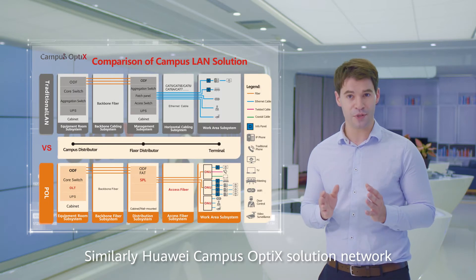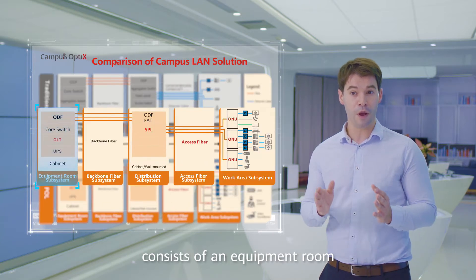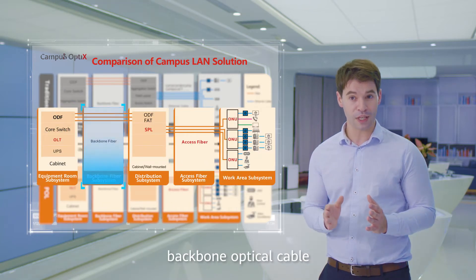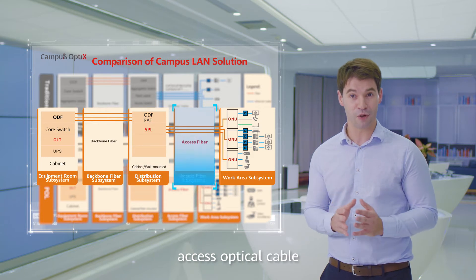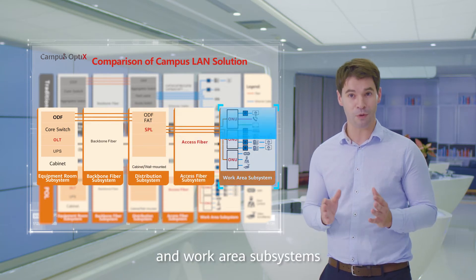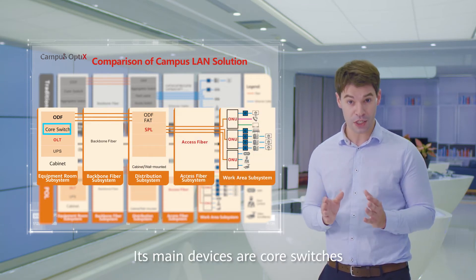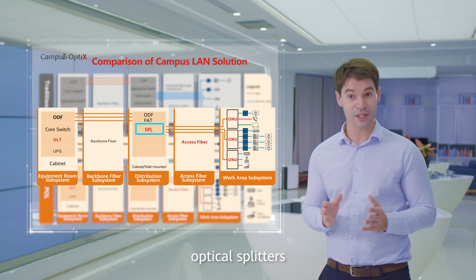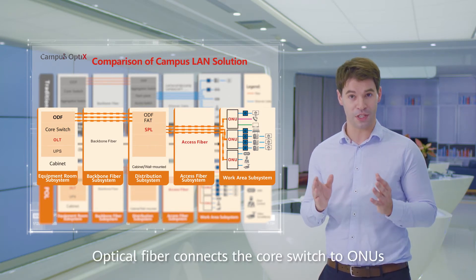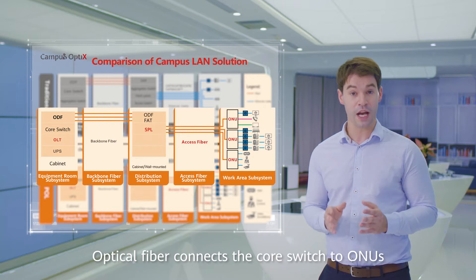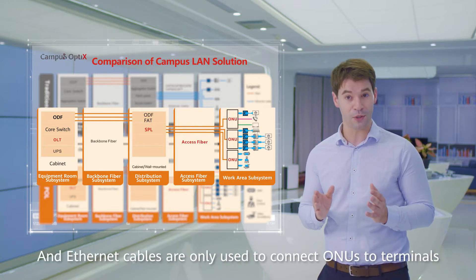Similarly, the campus optics network solution consists of an equipment room, backbone optical cable, distribution subsystem, access optical cable, and work area subsystems. Its main devices are core switches, OLTs, optical splitters, and ONUs. Optical fiber connects the core switch to ONUs, and Ethernet cables are only used to connect ONUs to terminals.